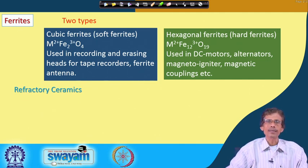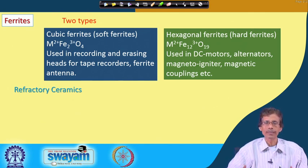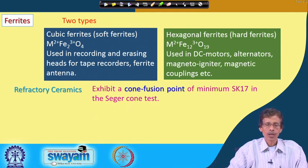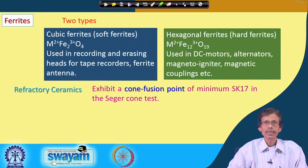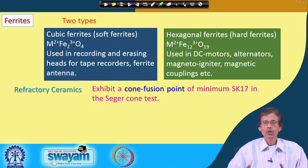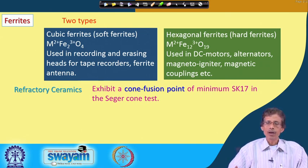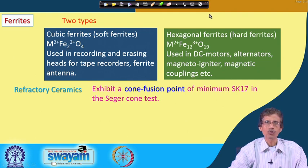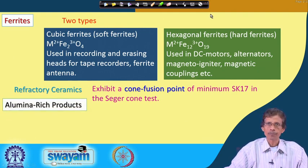Now we consider refractory materials — refractory bricks are also a kind of ceramic material. Refractory ceramics have a high withstand of temperature and are made from materials tested at a particular cone fusion point. They exhibit a minimum cone fusion point of SK 17 in the Seger cone test — when a material crosses this minimum level during the cone fusion test, it qualifies as a refractory ceramic product.